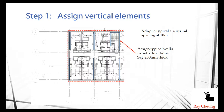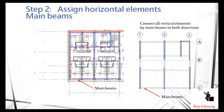After that, you just need to connect all the core walls and shear walls together. We say the beams are called main beams. This is used to resist the wind load and resist the vertical load. Remember, the vertical elements should be assigned in two directions like this one.